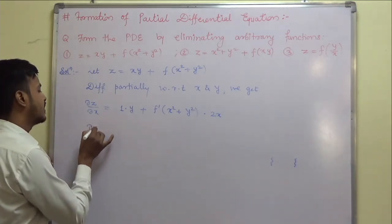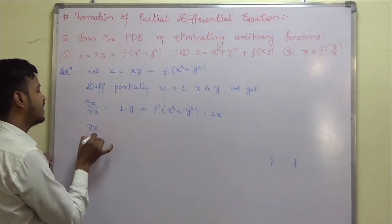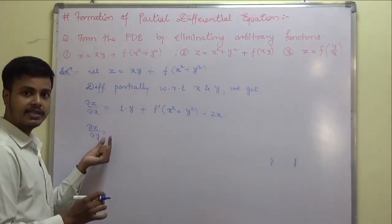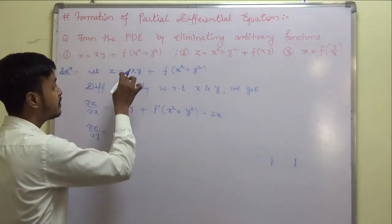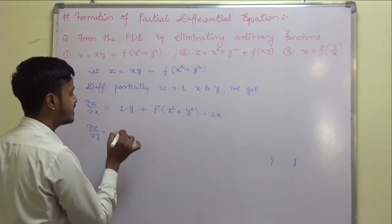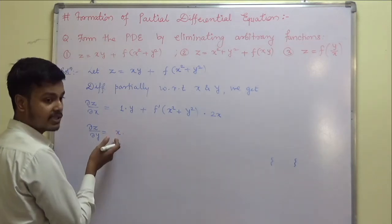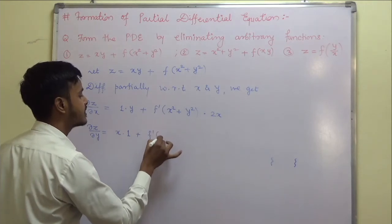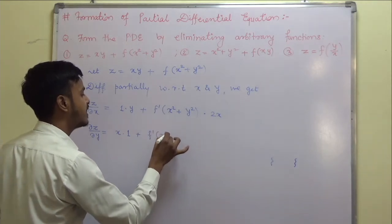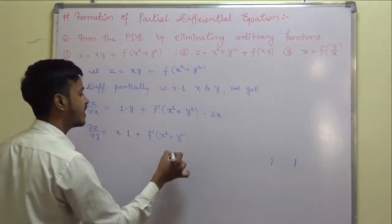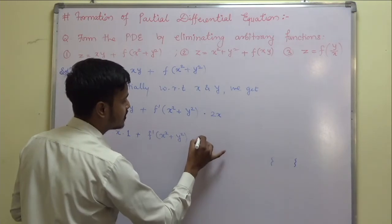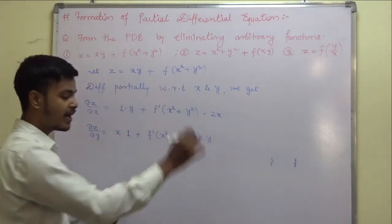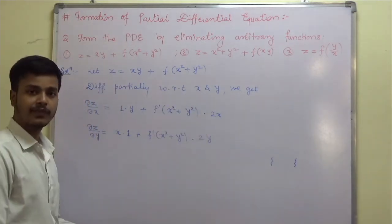Then del z by del y: the derivative of z with respect to y keeping x constant gives x as it is, because it is x times 1, plus f prime of x squared plus y squared multiplied by the derivative of x squared plus y squared with respect to y, which is 2y.